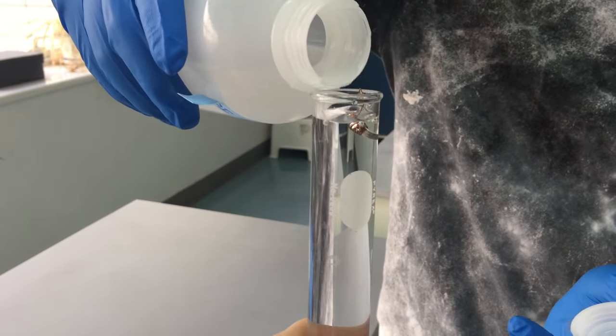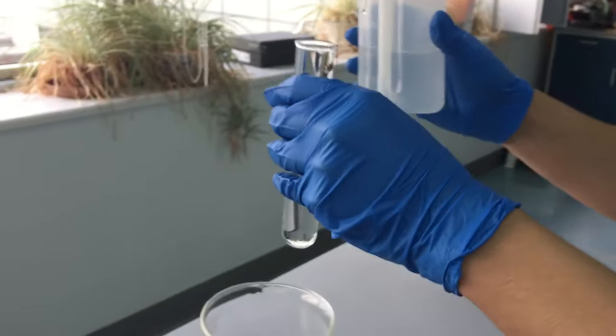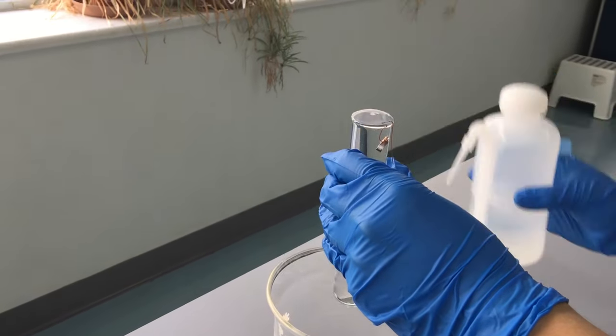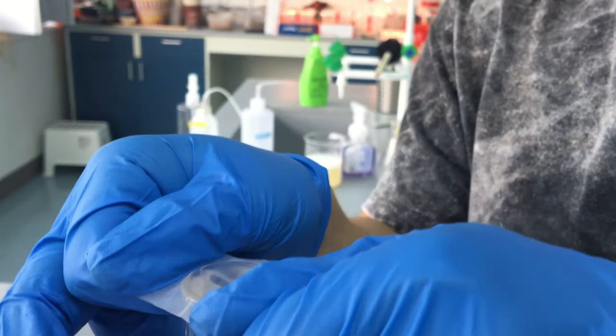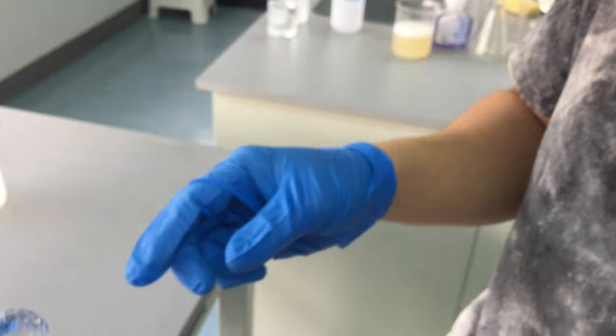Fill the test tube all the way with water. Seal the test tube with a piece of parafilm to keep the magnesium and water inside when you invert it into the hydrochloric acid.